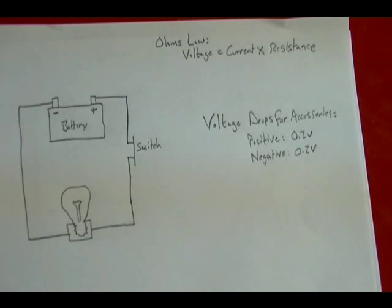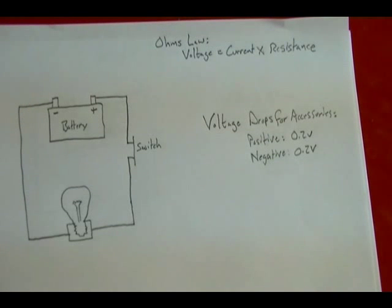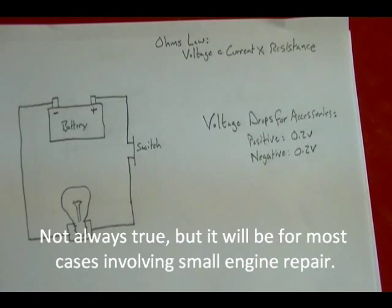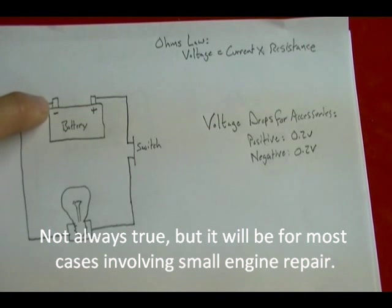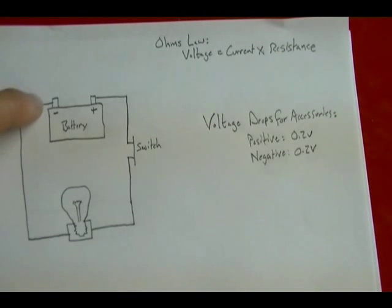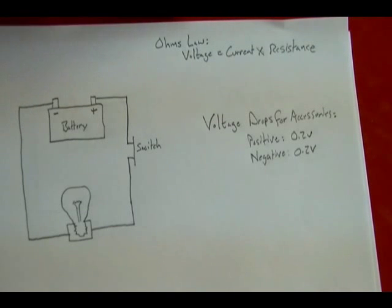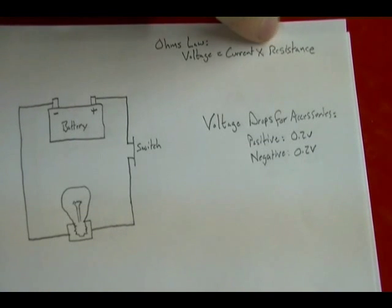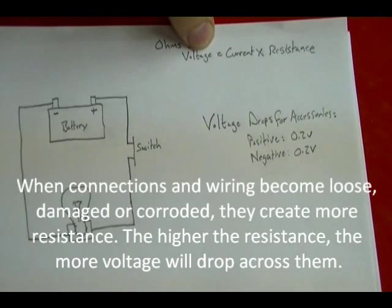When all the connection points are good and everything's new, you're going to have a very small voltage drop and it's going to be insignificant. But the older this circuit gets, the more corroded these connection points get, the more they loosen up over time, the more resistance it's going to create. And because of Ohm's law, when you have resistance and current flowing through whatever is creating that resistance, you're going to get voltage drops.